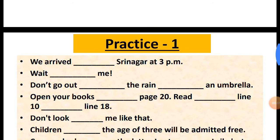This is Practice 1. We arrived — dash — Sreenagar at 3 p.m. Wait — dash — me. Don't go out — dash — the rain — dash — an umbrella. Open your book — dash — page 20. Read — dash — line 10 — dash — line 18. Don't look — dash — me like that.